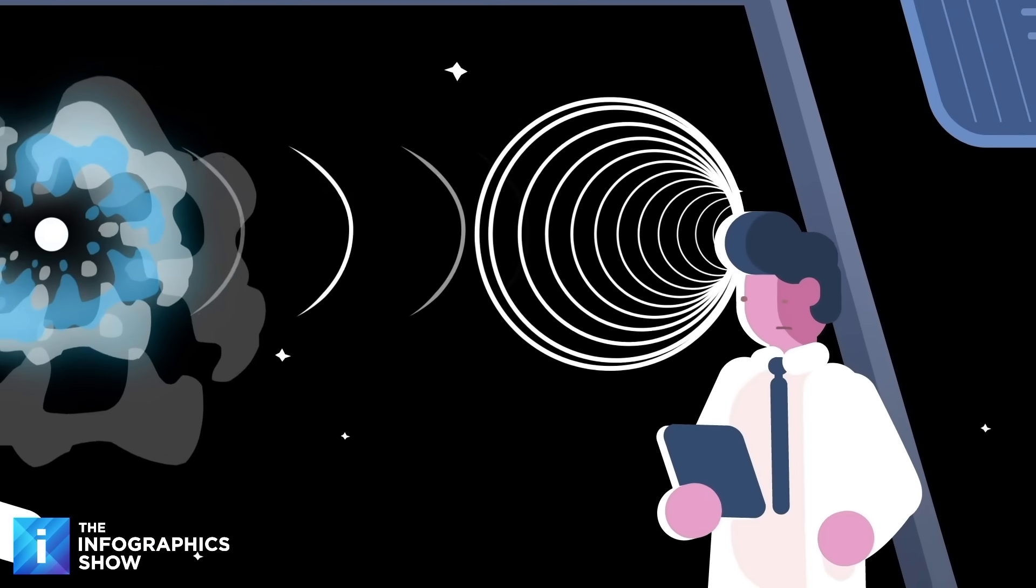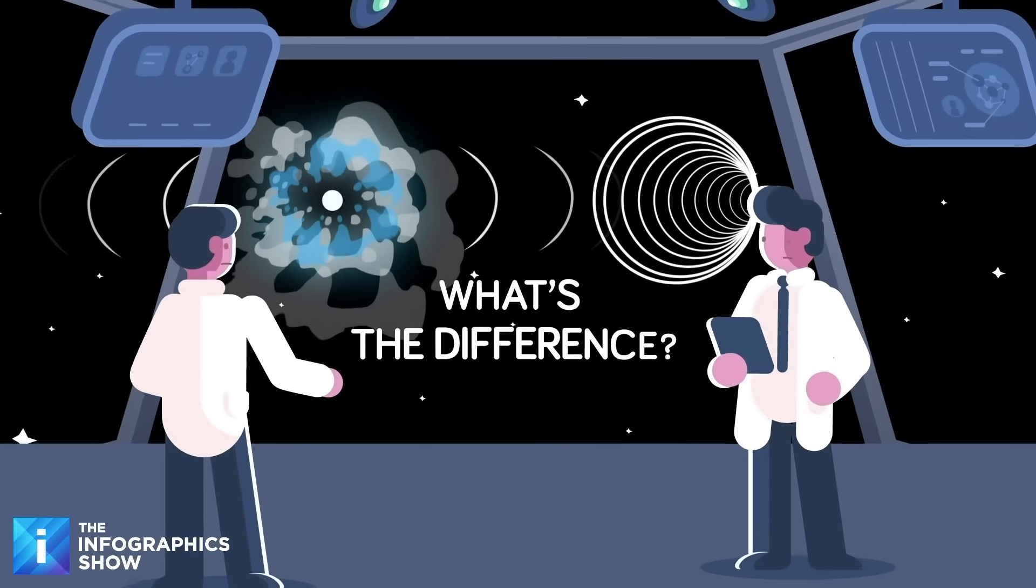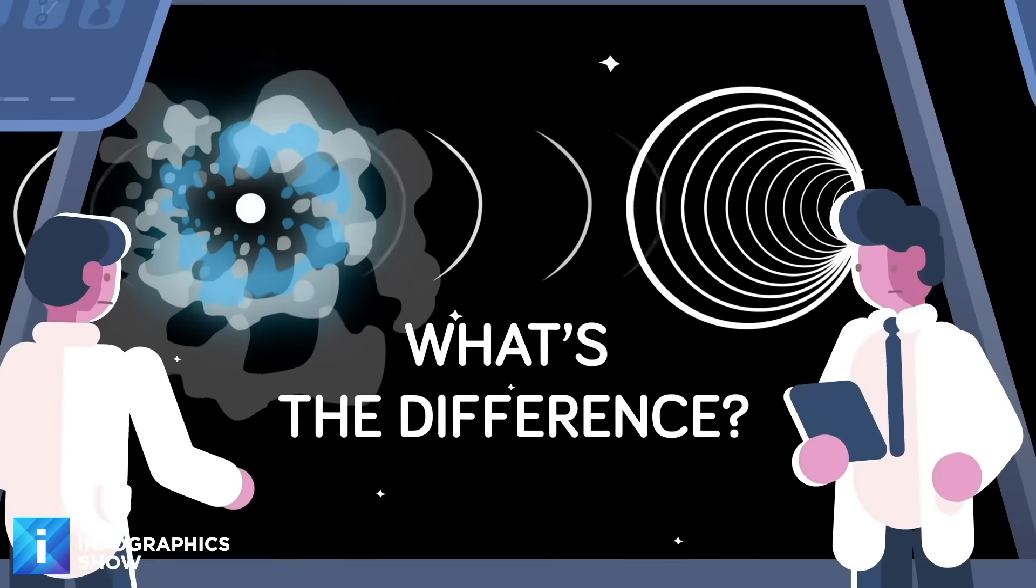After black holes, magnetars are the densest known objects in the universe. But if black holes are also the remains of dead stars, what's the difference?